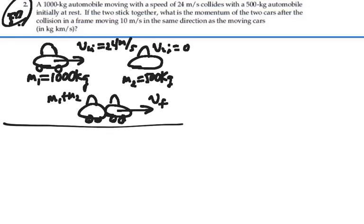So we know from Galilean mechanics that mass one V1 initial plus mass two V2 initial will equal mass one V1 final plus mass two V2 final.